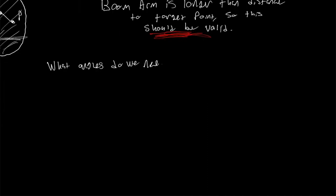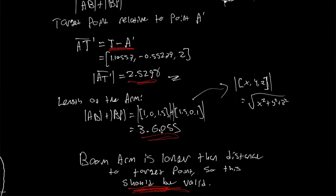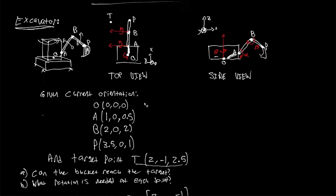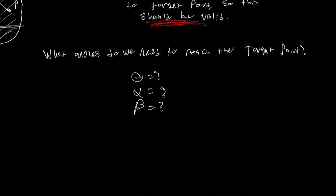Now, what angles do we need to reach the target point? When applying these rotations, it's easiest to start with the rotation at point B and move back up the arm. At point P there's no rotation, but at point B there's a rotation of link BP — we apply that first. Then at point A we apply that rotation second, and at point O we apply it last.